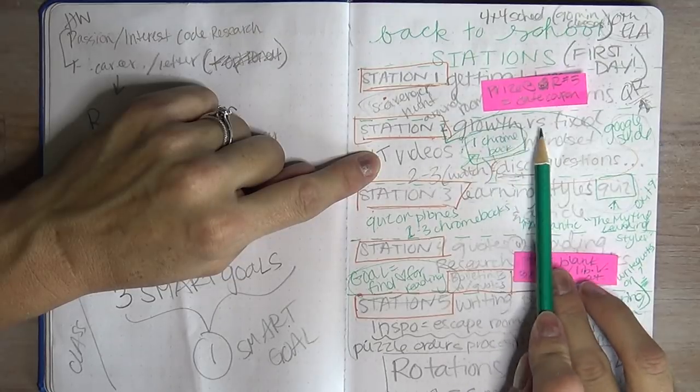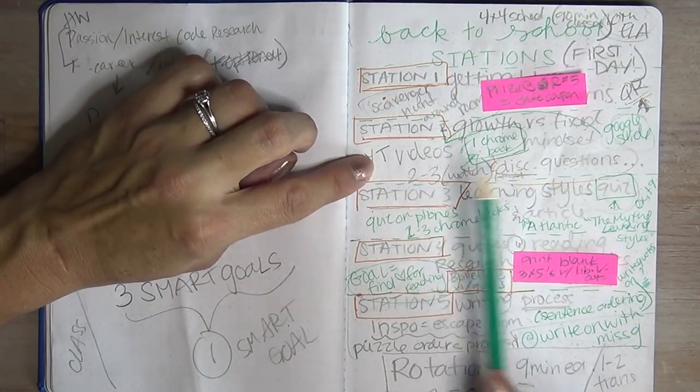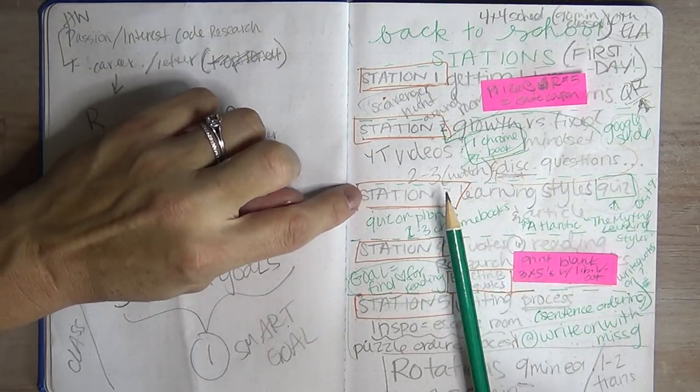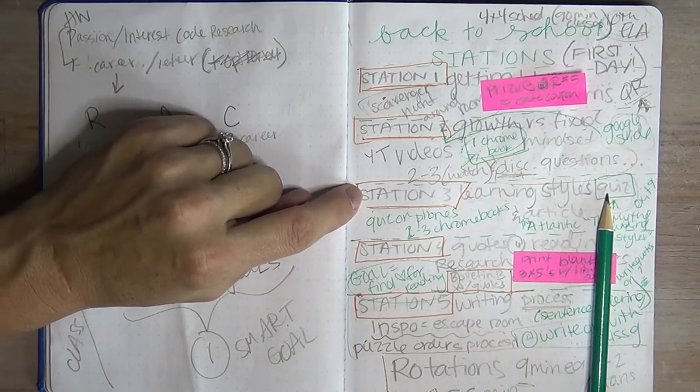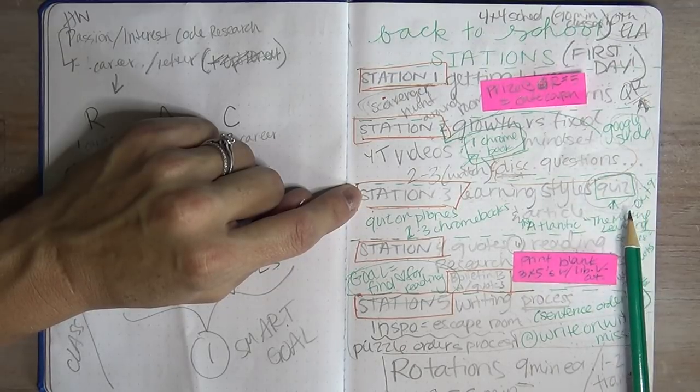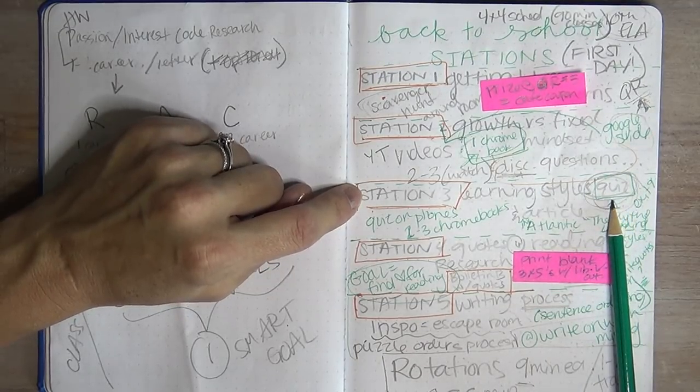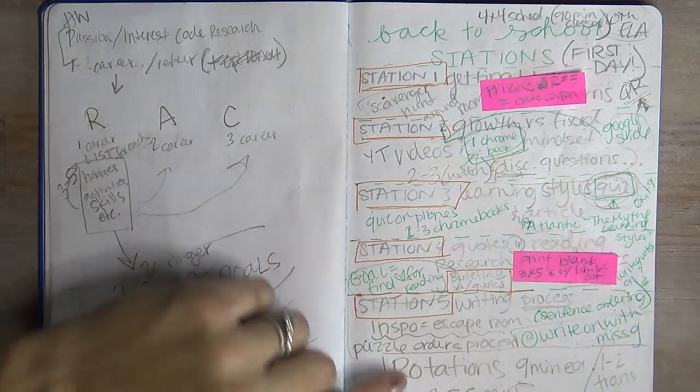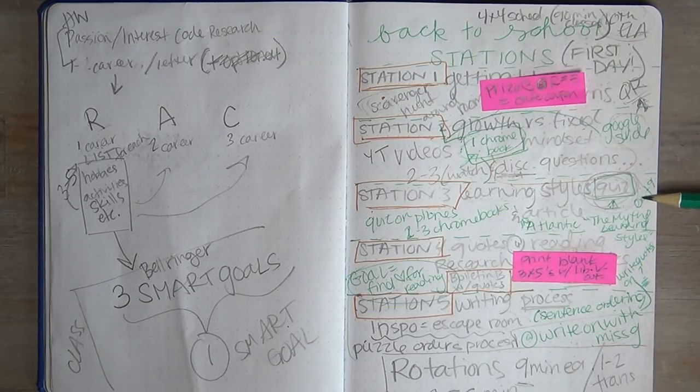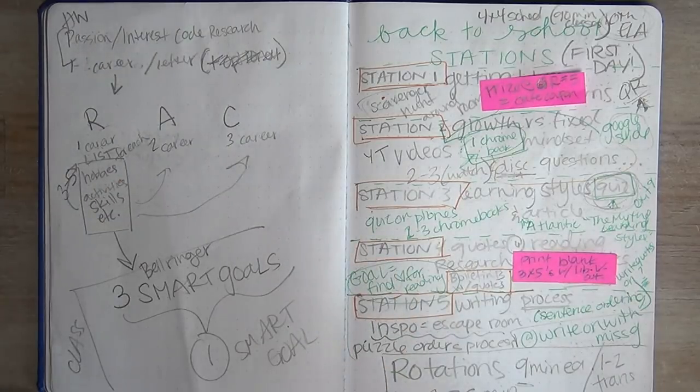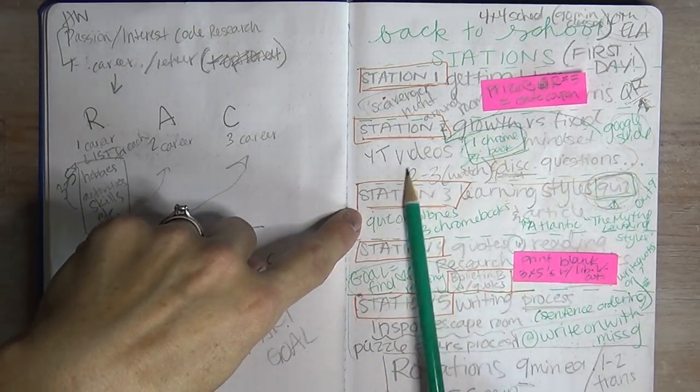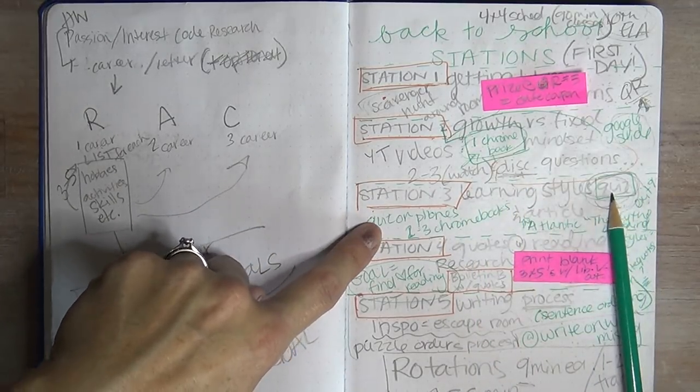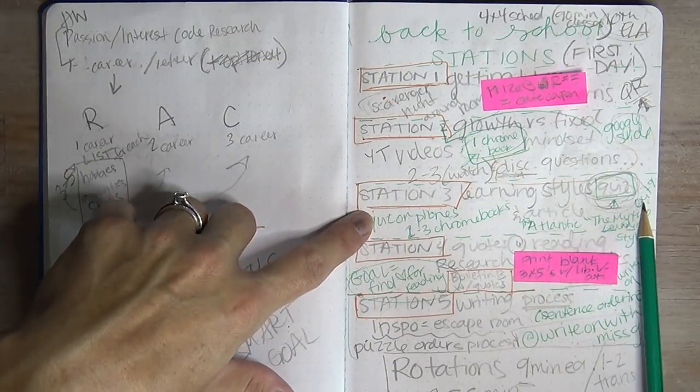The second station is growth versus a fixed mindset where they're going to just watch a video or two on YouTube and then sit in a group and answer some discussion questions. Then station number three is going to be a quiz on their learning styles, except I don't actually think it's going to be a quiz. I think it's going to be a video about learning styles. Then there's an article from the Atlantic called the myth of learning styles, which debunks learning styles and multiple intelligences because that's not a thing. I'll have some sort of an exit ticket question for them to fill out and leave at the station for me to pick up at the end so I can go through and then talk about it the next day.